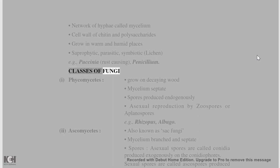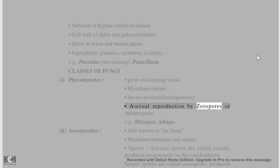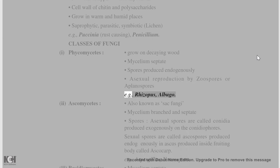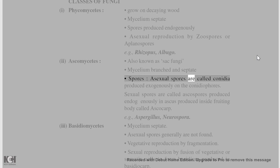Classes of Fungi: Phycomycetes grow on decaying wood. Their mycelium is non-septate and spores are produced endogenously. Asexual reproduction occurs by zoospores or aplanospores, e.g., Rhizopus, Albugo. Ascomycetes, also known as sac fungi, have branched and septate mycelium. Asexual spores are called conidia, produced exogenously on conidiophores.